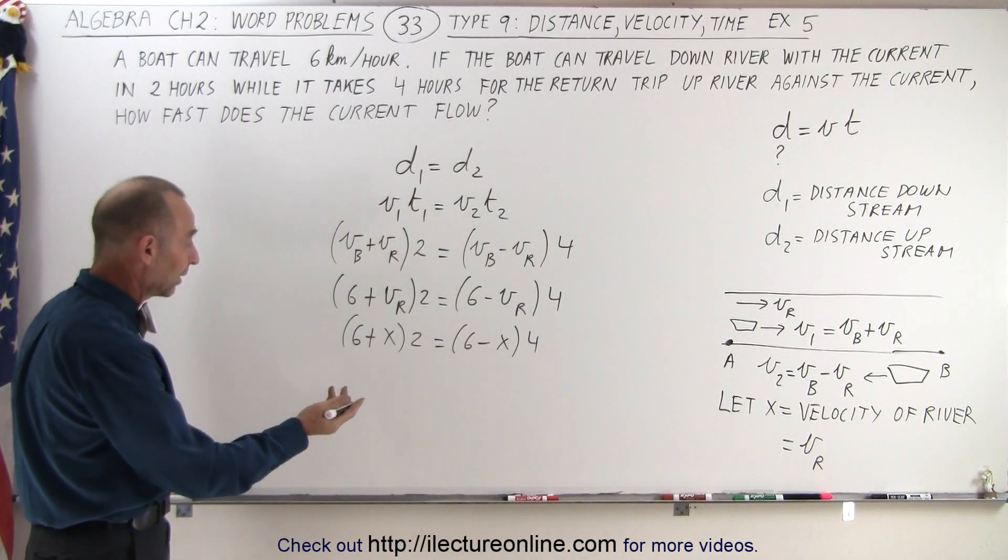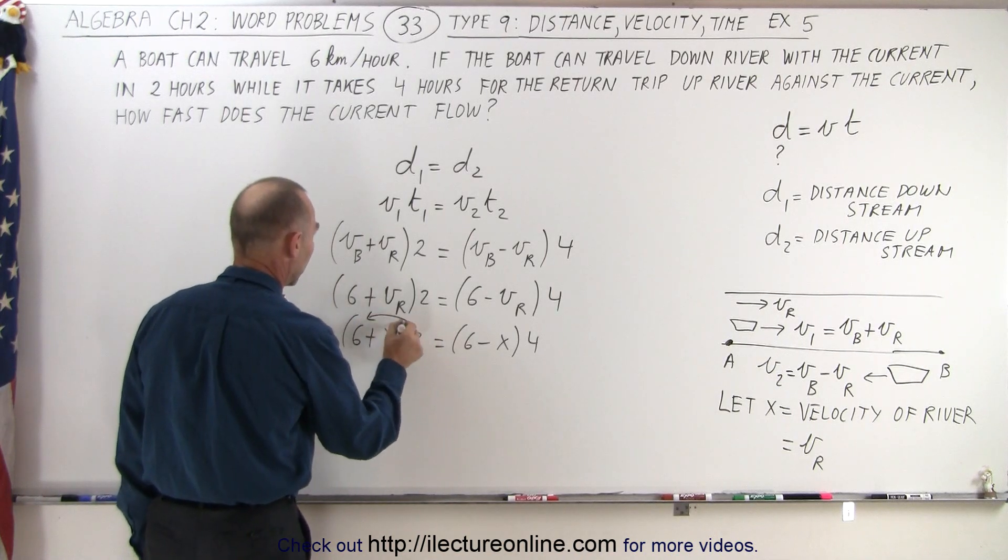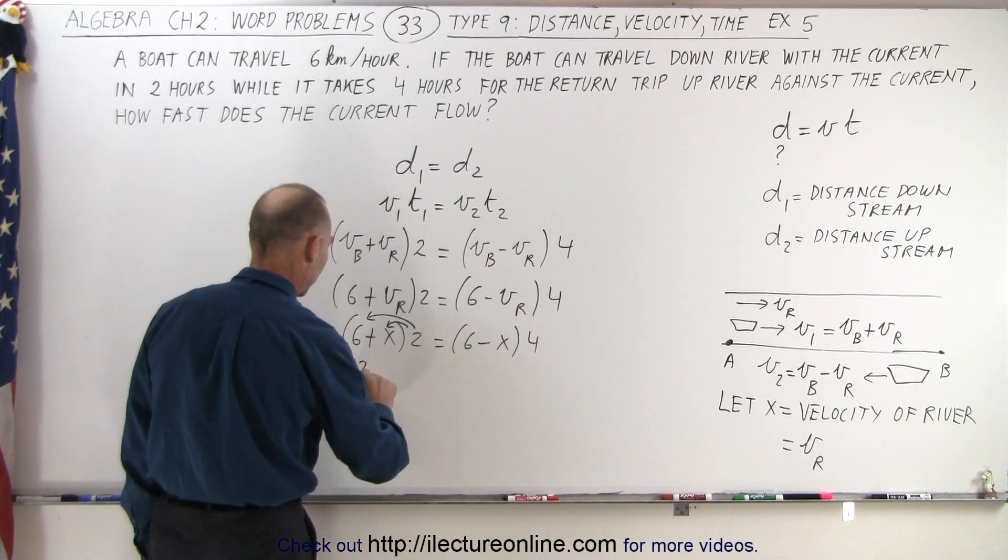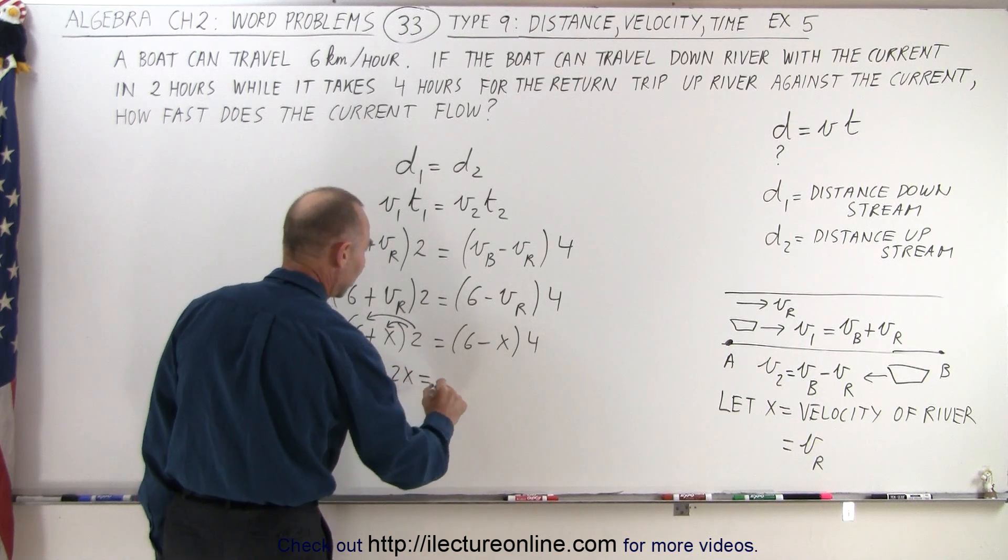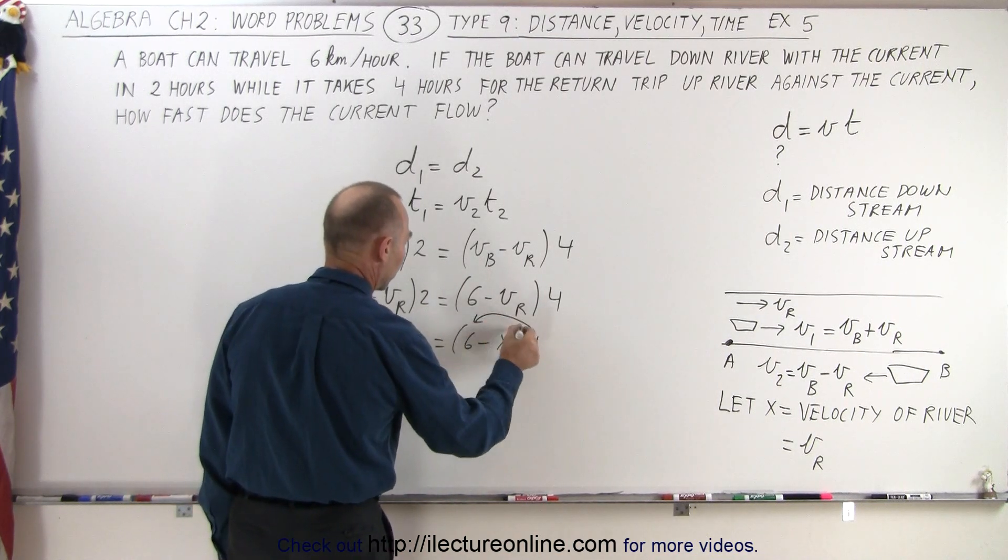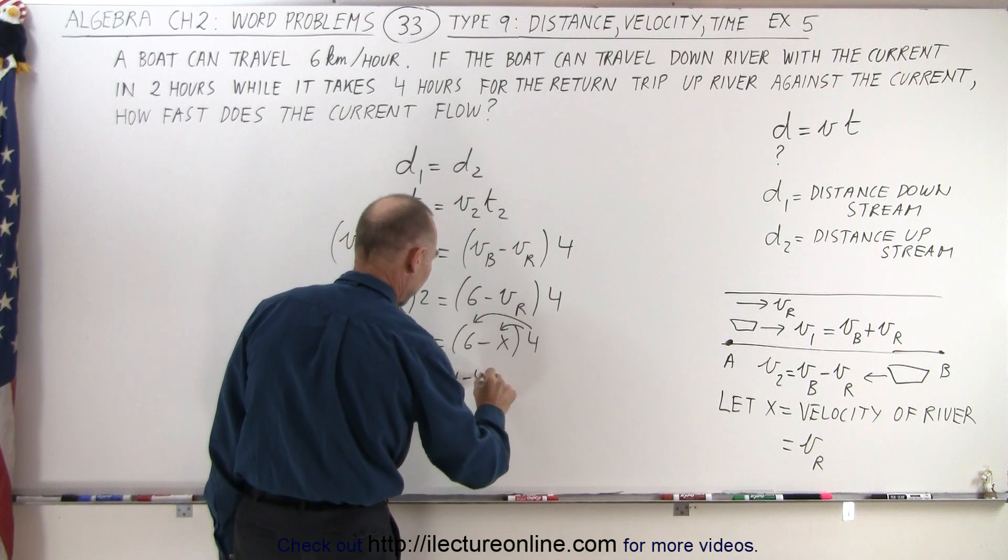First we're going to get rid of the parentheses by distributing the 2 on both terms. So this gives us 12 plus 2x equals, now we distribute the 4, and we get 24 minus 4x.